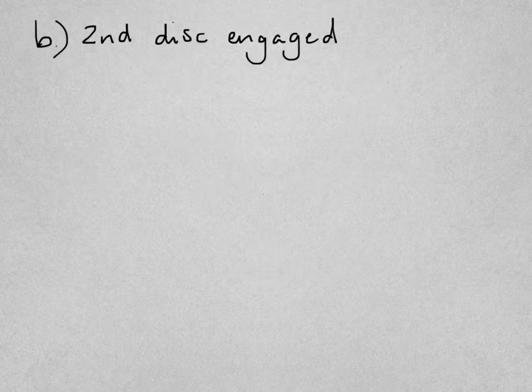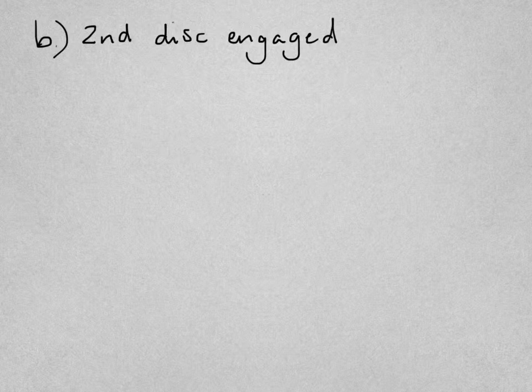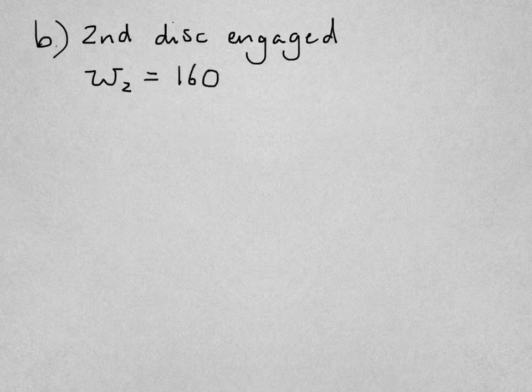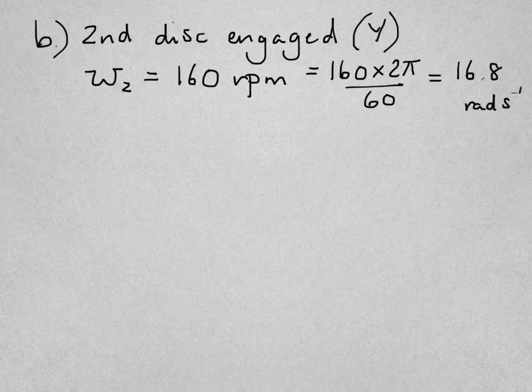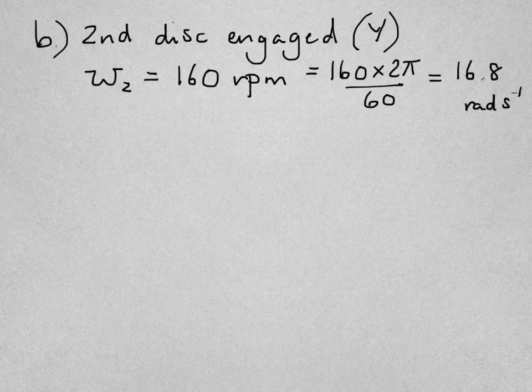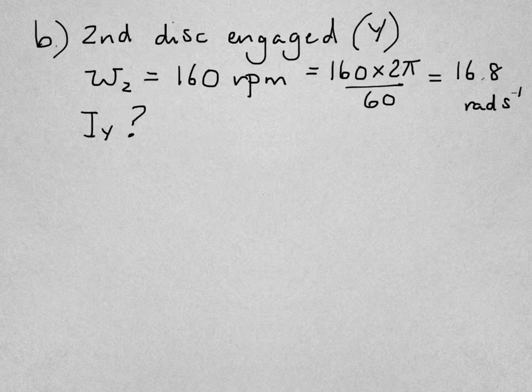Part B says after a second disc Y that is initially stationary is engaged by X, both discs rotate at 160 revolutions per minute. I'm going to do the same conversion again for that second disc, multiply by 2π divide by 60, that gives us 16.8 radians per second for the two discs combined. We're to calculate the moment of inertia of Y, the second disc.